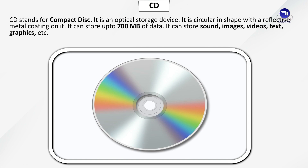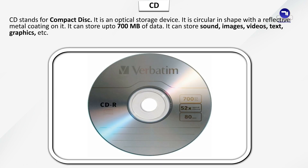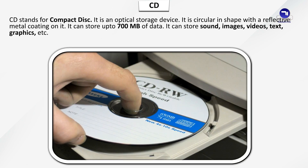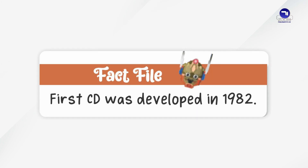CD stands for Compact Disc. It is an optical storage device, circular in shape with a reflective metal coating on it. It can store up to 700 MB of data, including sound, images, videos, text and graphics. Fact File: The first CD was developed in 1982.